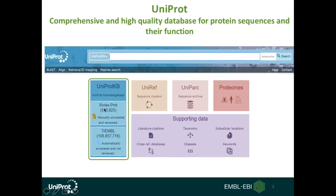The first component is Swiss-Prot. Swiss-Prot contains the protein entries which have been looked into by expert scientific curators. Every bit of information for these proteins is extracted from the scientific literature manually and presented for the protein entries in the database. There are more than 0.5 million such reviewed entries in the database.